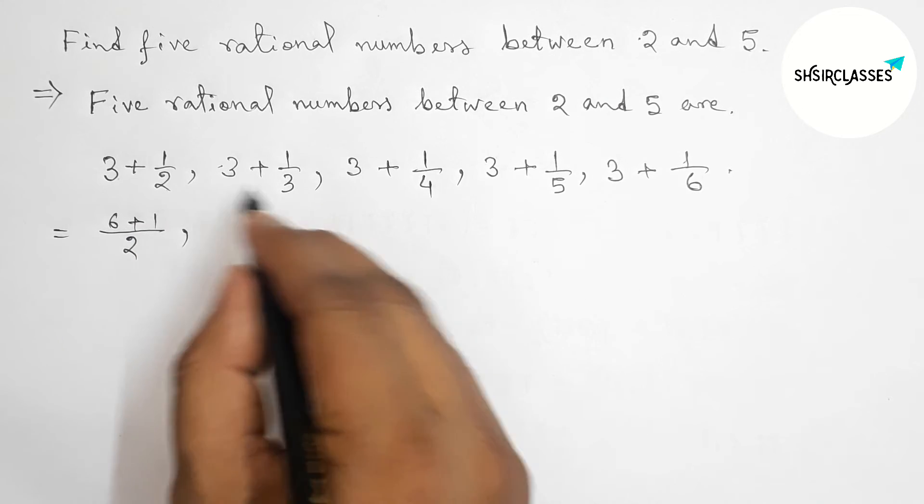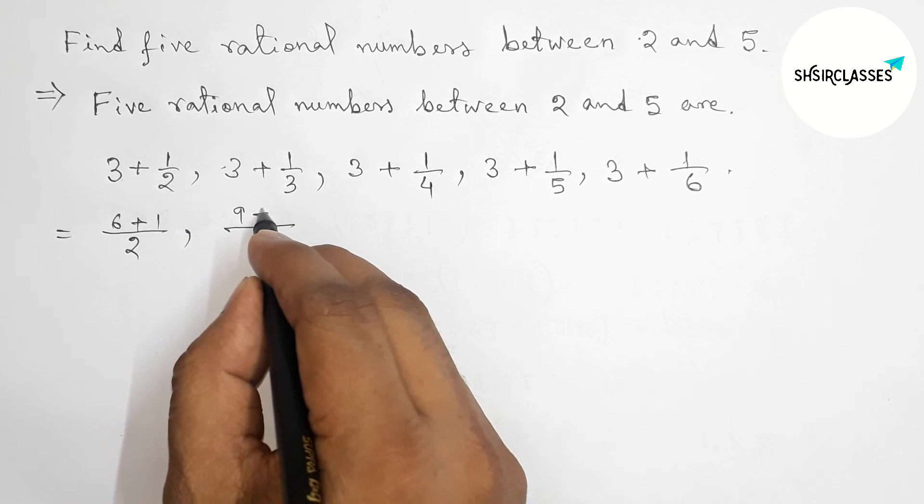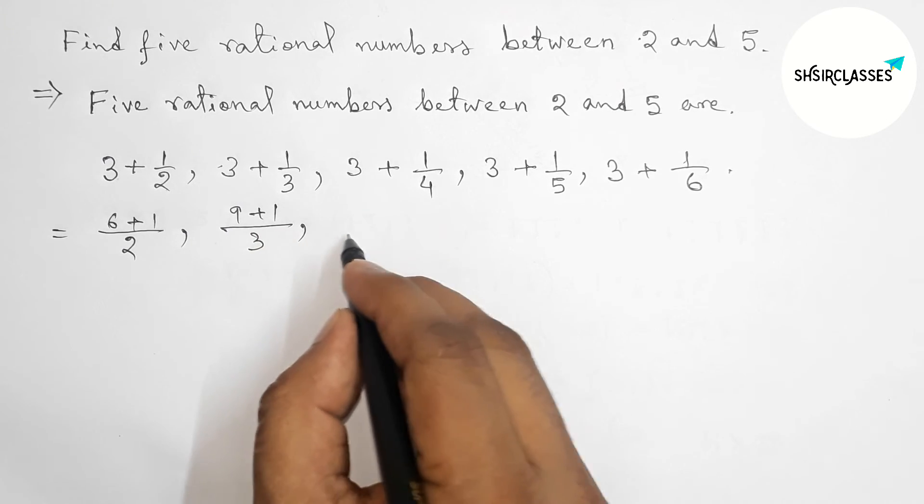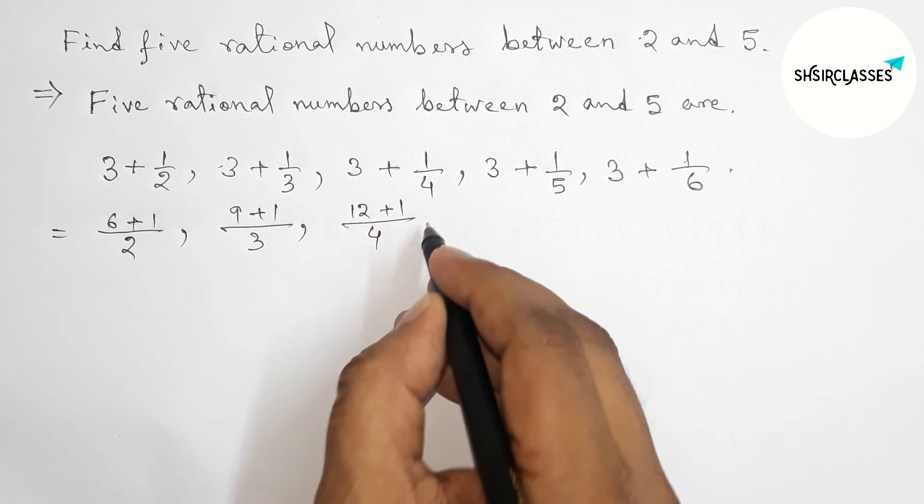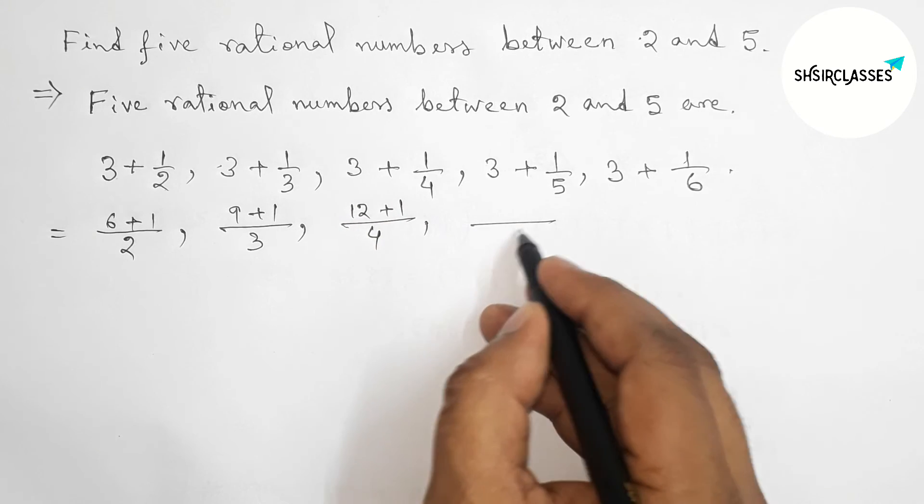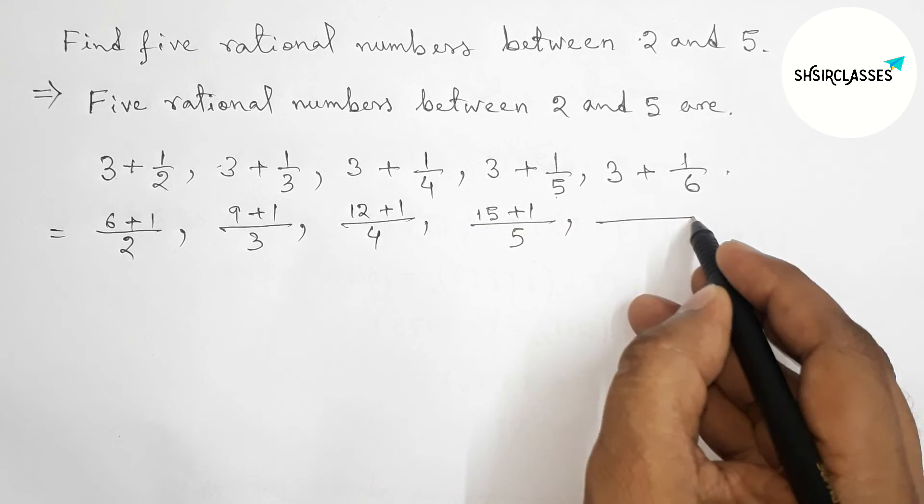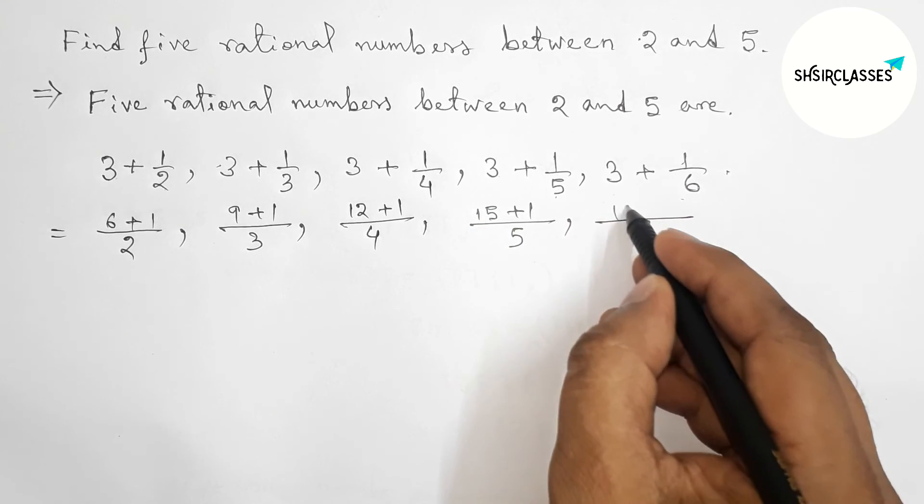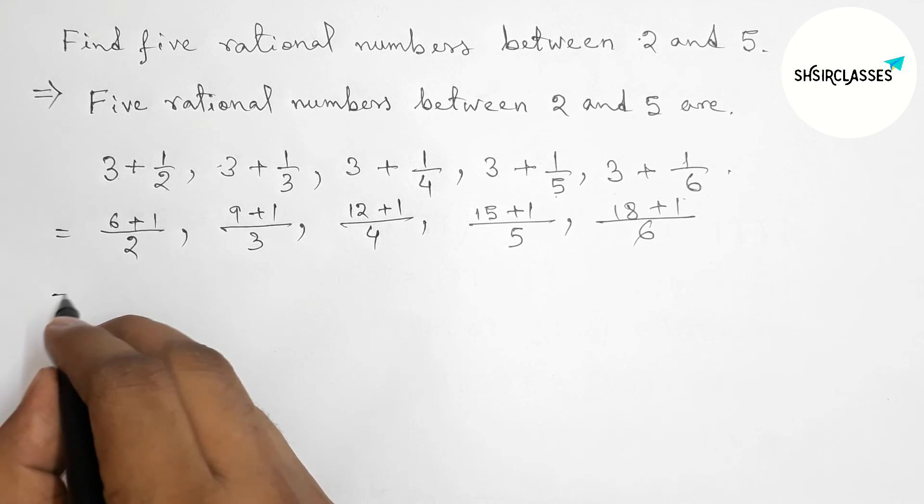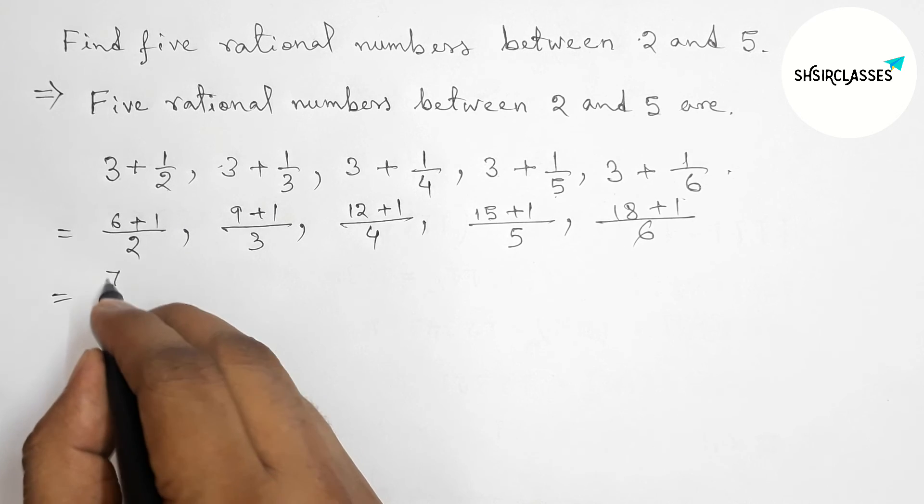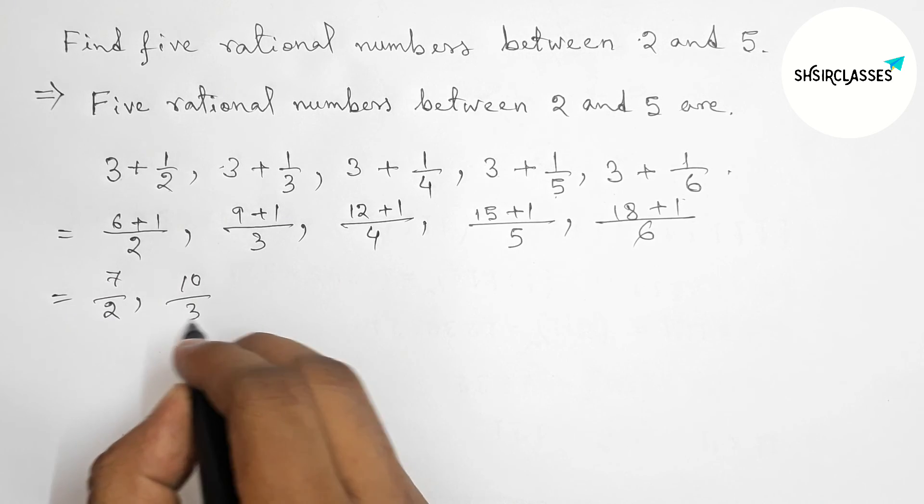Now simplifying this. Here, 2 times 3 is 6 plus 1. LCM is 3, so 3 times 3 is 9 plus 1. 4 times 3 is 12 plus 1. 5 times 3 is 15 plus 1. 6 times 3 is 18 plus 1. So this is 7/2, this is 10/3, 13/4, 16/5, and this is 19/6.